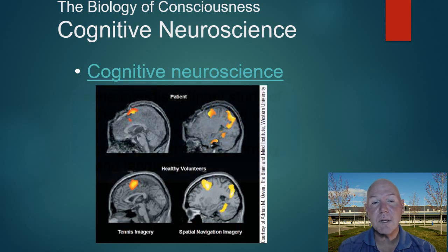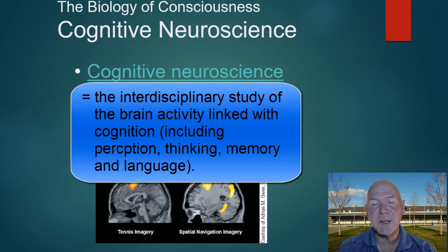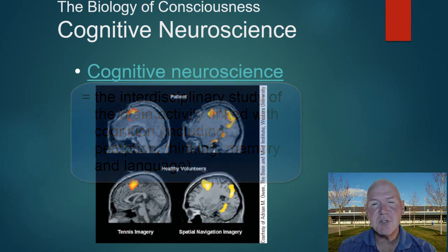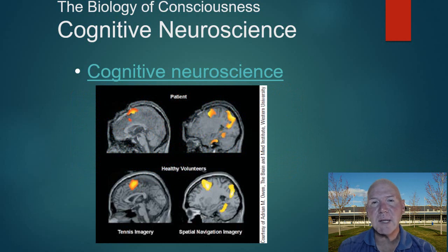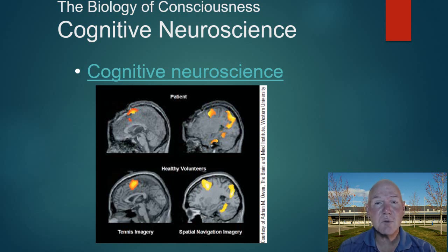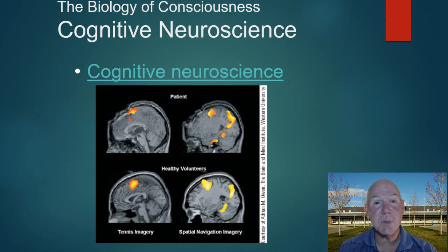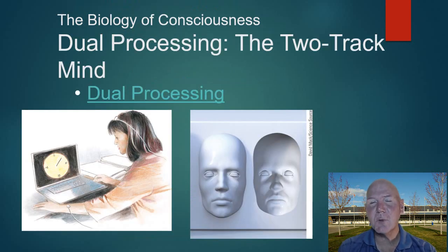Cognitive neuroscience looks at what's happening inside the brain when we do things. Studies of paralyzed but conscious patients show that when told to imagine serving a tennis ball, the same brain circuits used for the actual movement light up. This confirms that visualization is like actually performing the task — something many athletes already know. This leads back to the concept of dual processing.